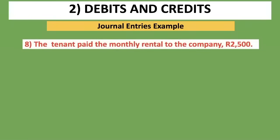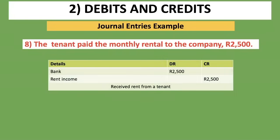Transaction eight: the tenant paid the monthly rent to the company, 2,500 rand. The tenant paid us, so money is coming in — Bank is increasing and is our first account. What was paid is rent, and since we are receiving it, it is Rent Income — our second account. We debit Bank because the asset is increasing, and credit Rent Income. Journal entry: Debit Bank 2,500 rand, Credit Rent Income 2,500 rand. Narration: received rent from a tenant.